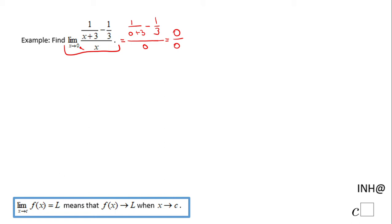This means we have to use another way to find this limit. Take the numerator and try to simplify this subtraction of two rational expressions. The least common multiple for these two expressions is 3 times (x+3).